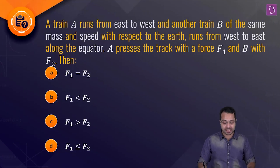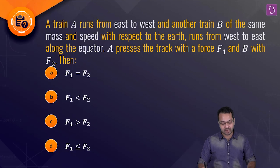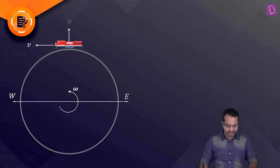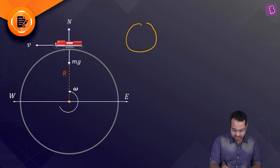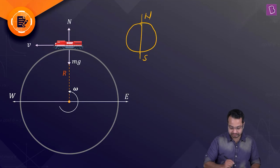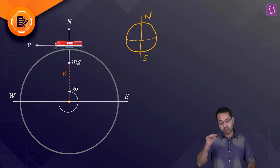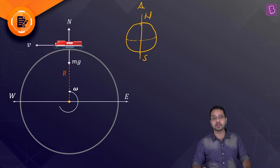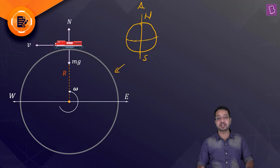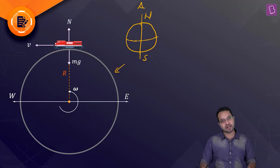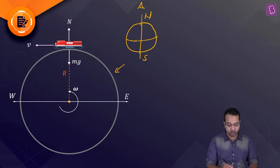Next question: train A runs from east to west and train B of the same mass and speed with respect to the earth runs from west to east along the equator. A presses the track with force F1 and B with force F2. We need the relationship between F1 and F2. The earth rotates from west to east, so viewed from the North Pole the angular velocity is anti-clockwise.